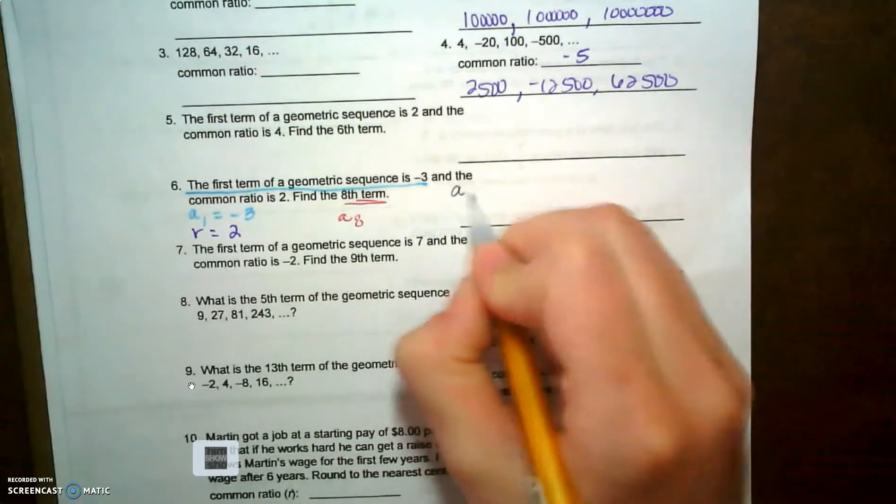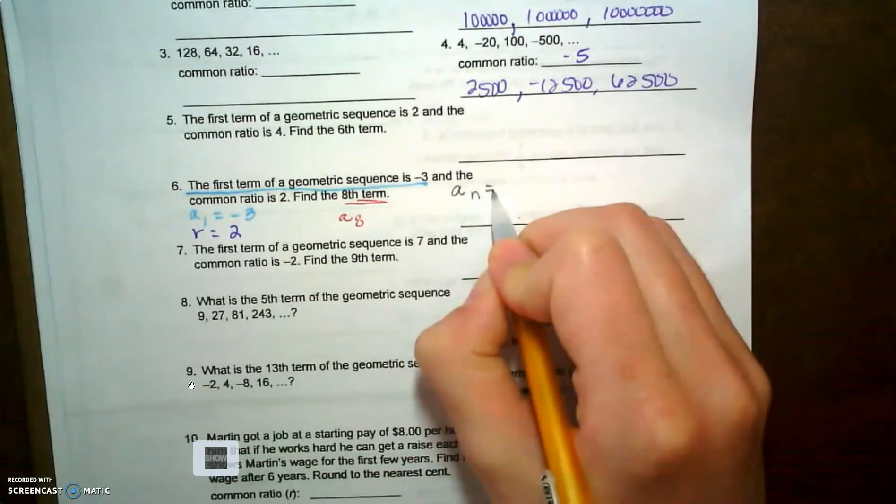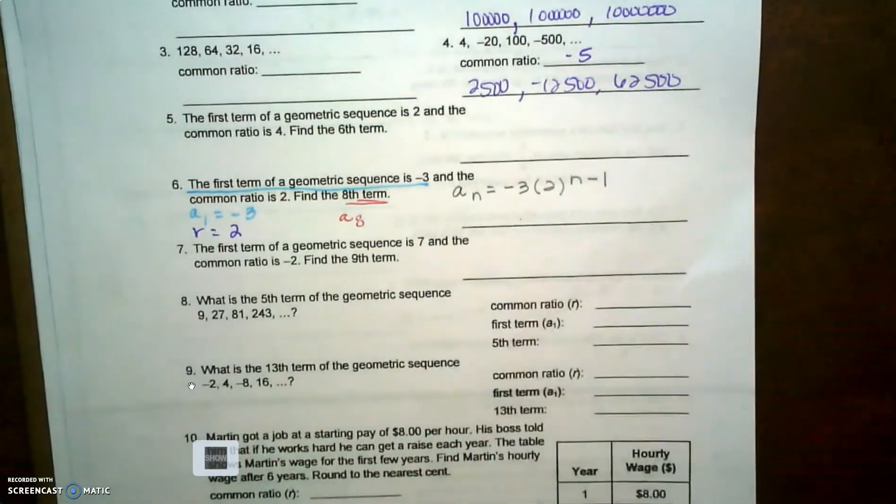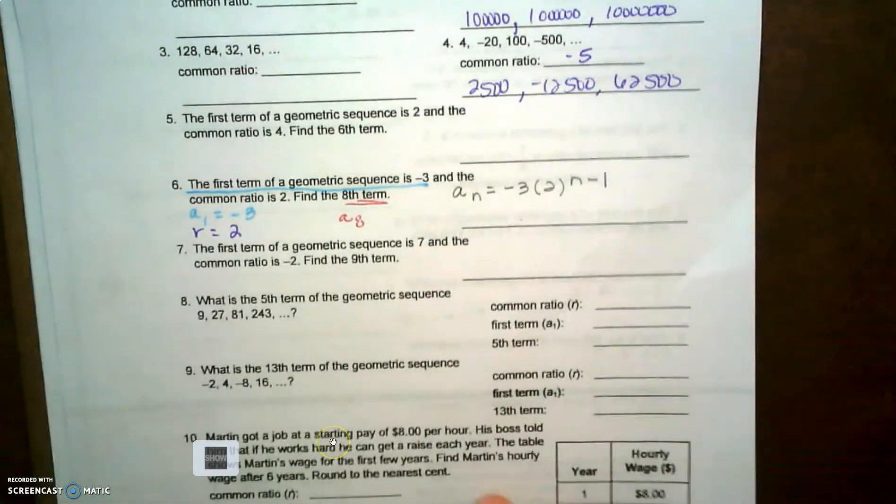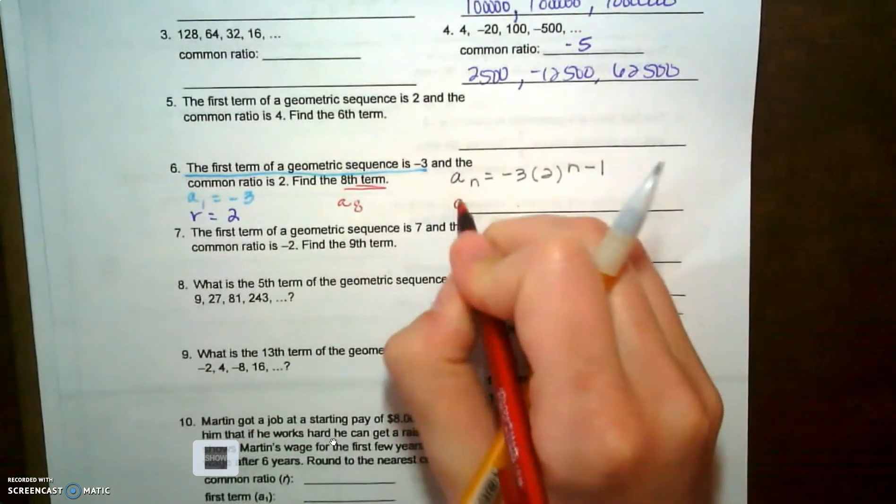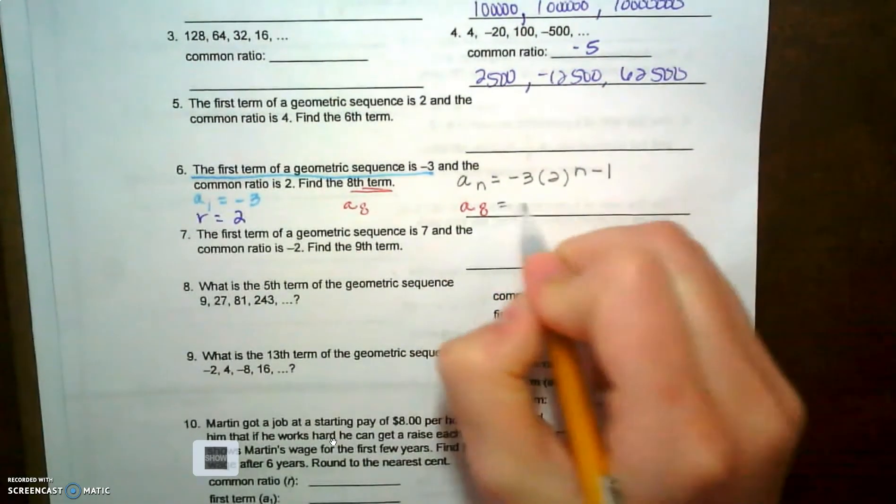So the first thing I'm gonna write down is my explicit equation. I know my explicit equation is a sub n equals my first term times r raised to the n minus one. That is my explicit equation, my explicit formula.